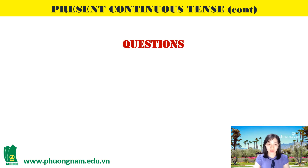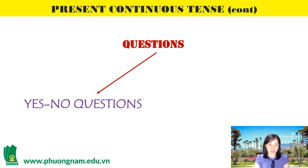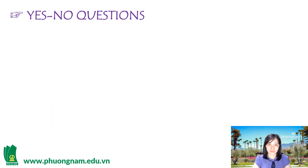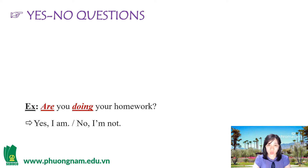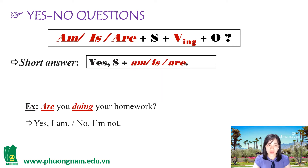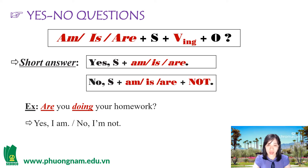Present continuous tense — Questions. Thì hiện tại tiếp diễn, câu hỏi. Chúng ta có hai dạng: Dạng thứ nhất là Yes/No questions, và dạng thứ hai là WH questions. Đối với Yes/No questions, ví dụ: Are you doing your homework? Yes, I am. No, I'm not. Công thức: Am/Is/Are + subject + verb-ing + object. Câu trả lời: Yes + subject + am/is/are; hoặc No + subject + am/is/are + not.